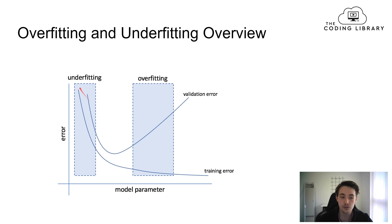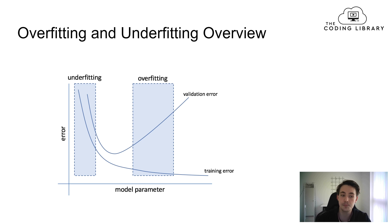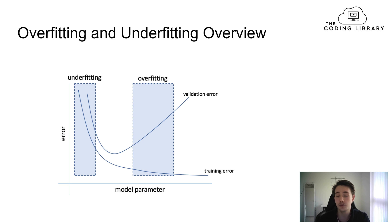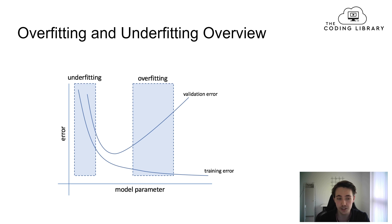We can see that these two graph lines follow each other pretty well in the underfitting area. When we haven't trained our neural network much and have few model parameters, our model is underfitting — it can't do predictions on new data because the neural network is not able to generalize. This could be caused by not enough complexity in the neural network or not enough training data for it to learn from.